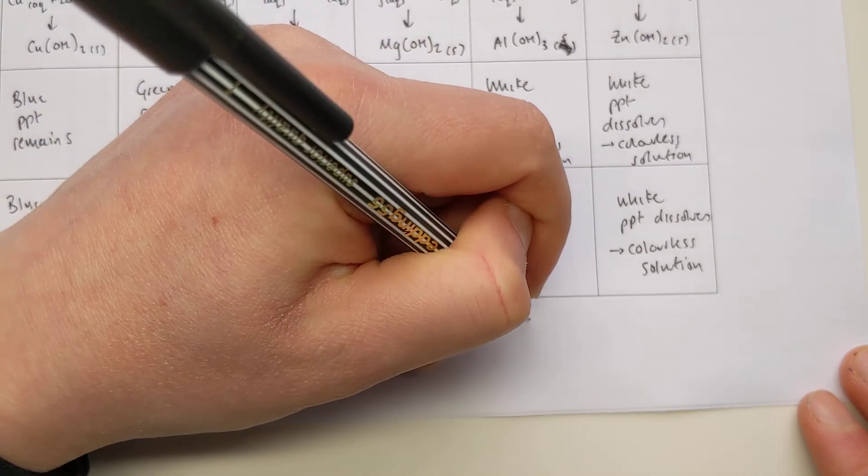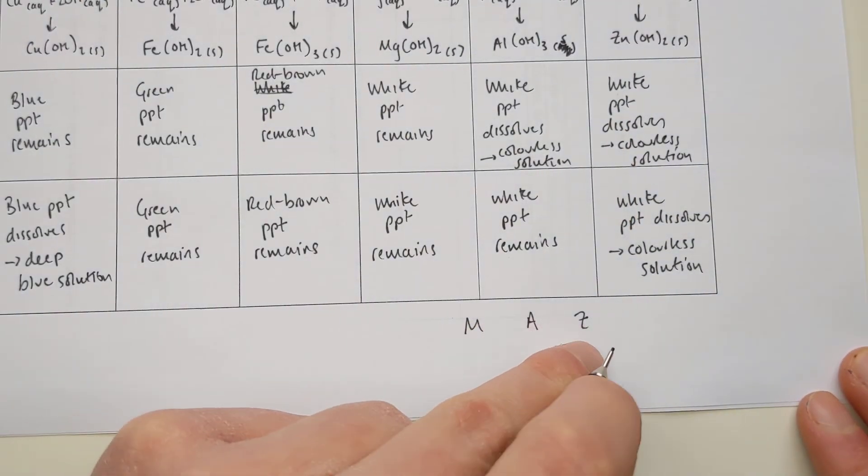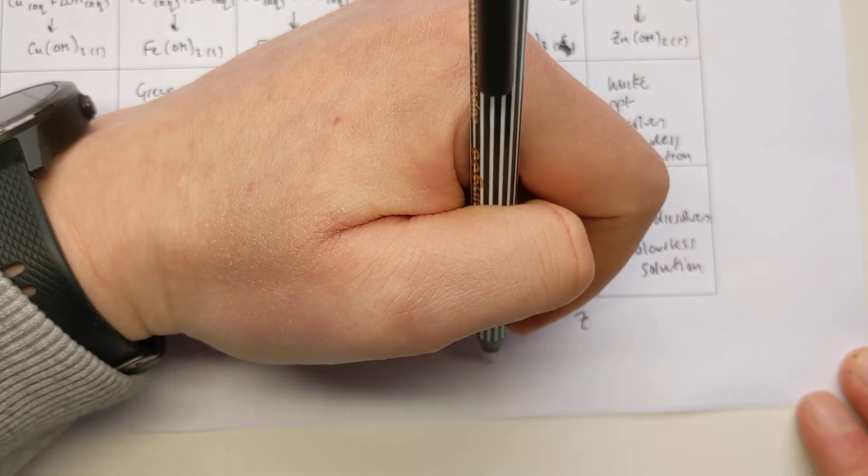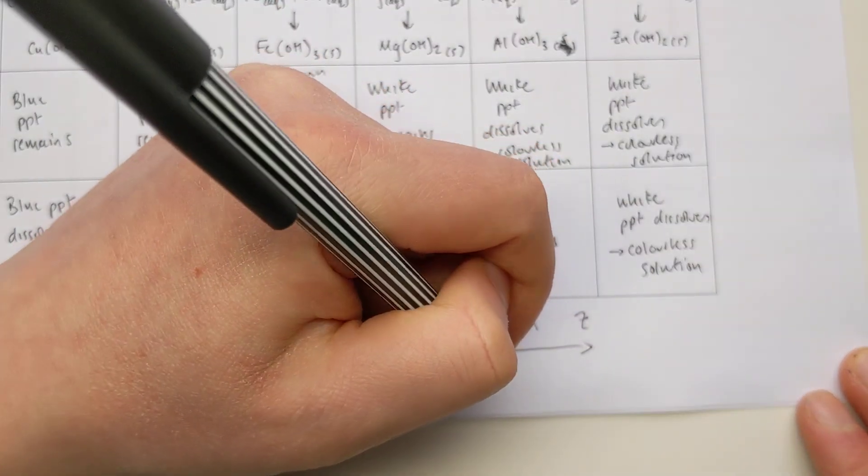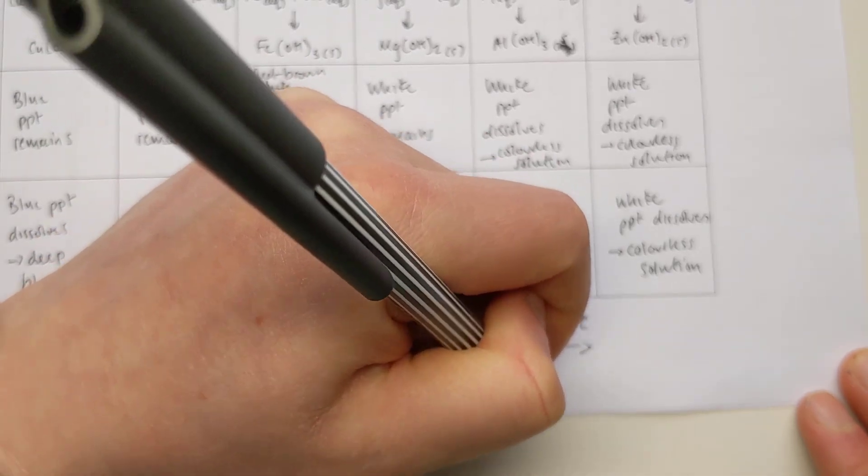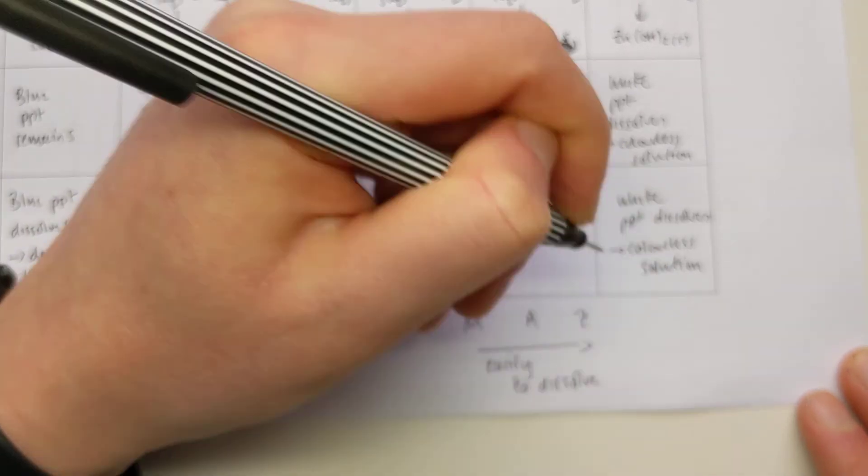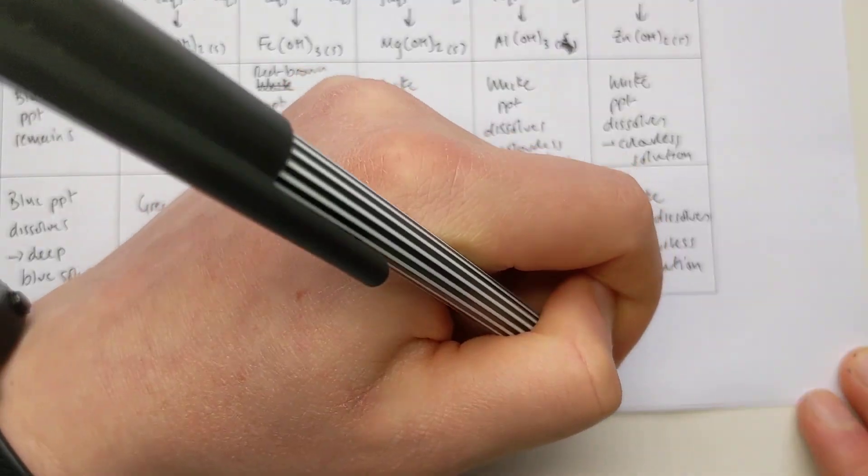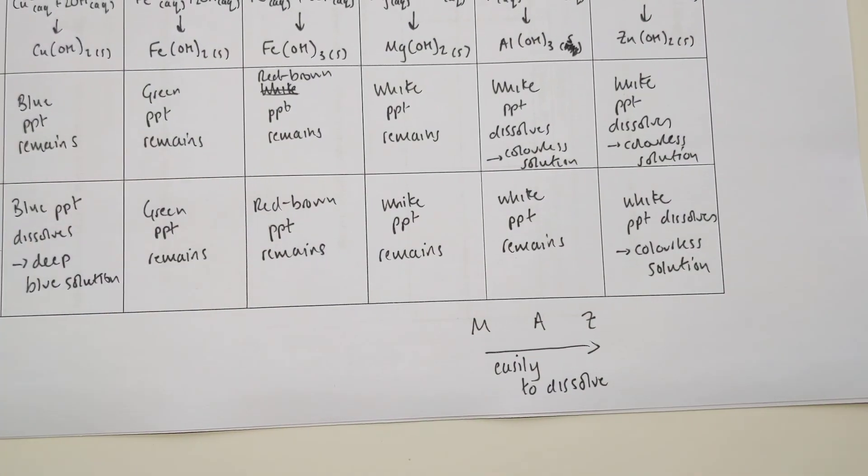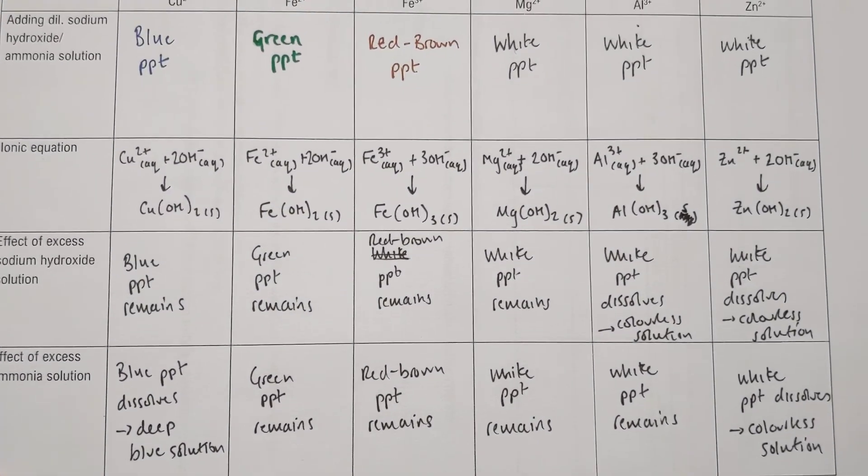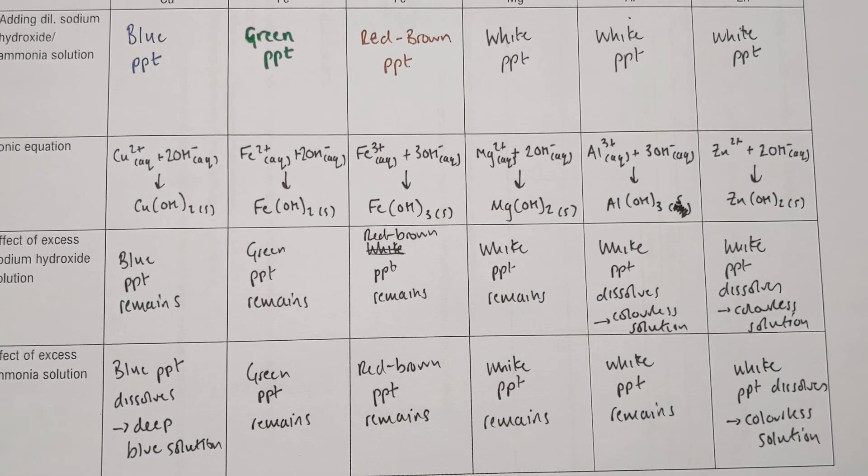That is quite hard to remember off by heart because lots of white precipitates. One tip I've seen is to call them M, A and Z: magnesium, aluminum, zinc. The trend you see is from magnesium to aluminum to zinc, they become easier to dissolve the precipitates. Magnesium never dissolves in excess, aluminum dissolves in one and zinc dissolves in both of them. In a nutshell, it is essentially a lot of learning this little table. However, if you do learn it well, the colors, the equations and the patterns for redissolving in extra sodium hydroxide and ammonia, the questions come quite easy because lots of them just rely on you recalling those results. If you learn them well, you get good marks for it.